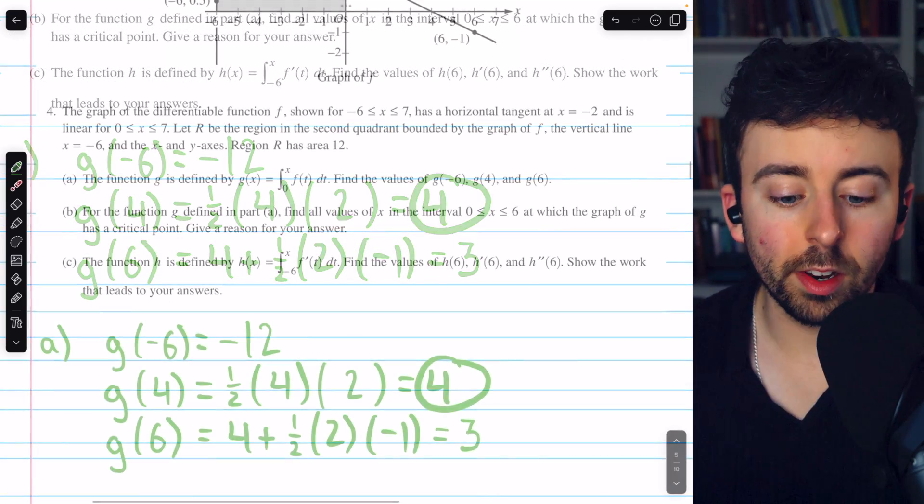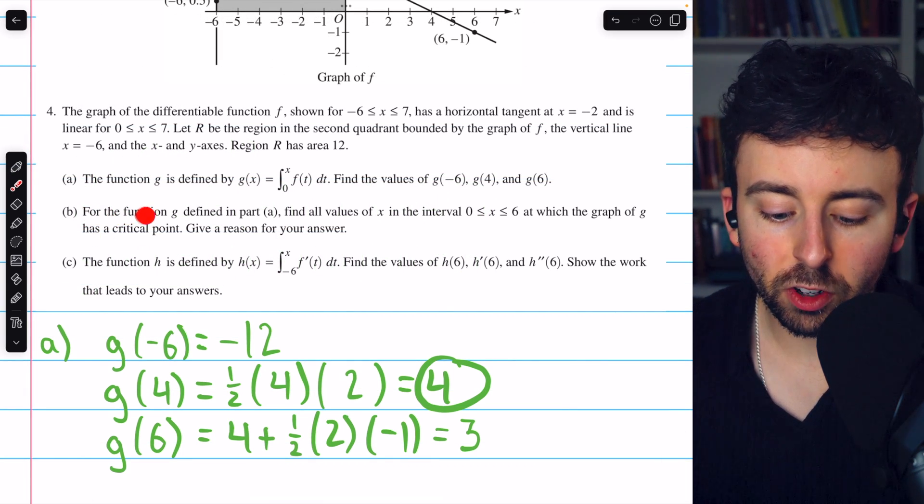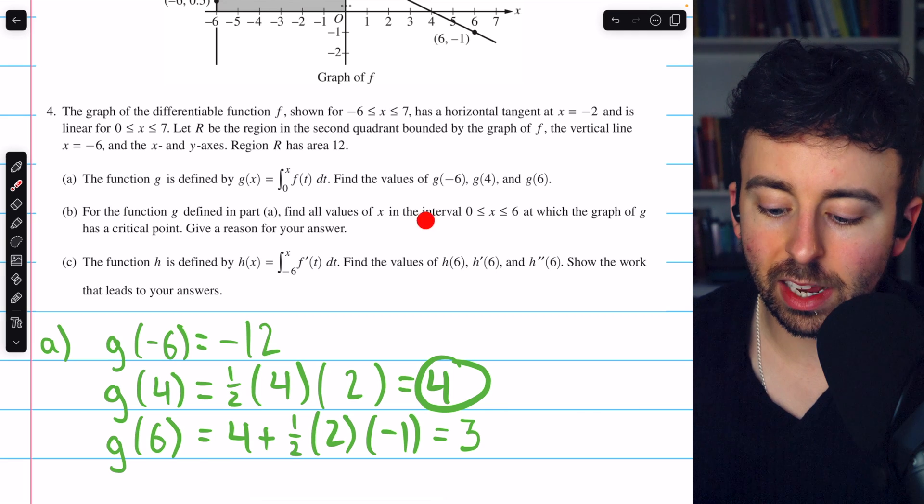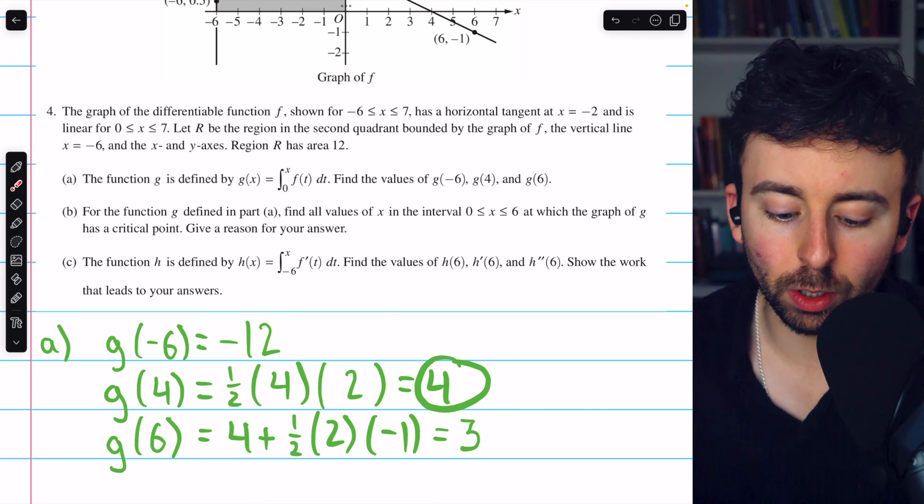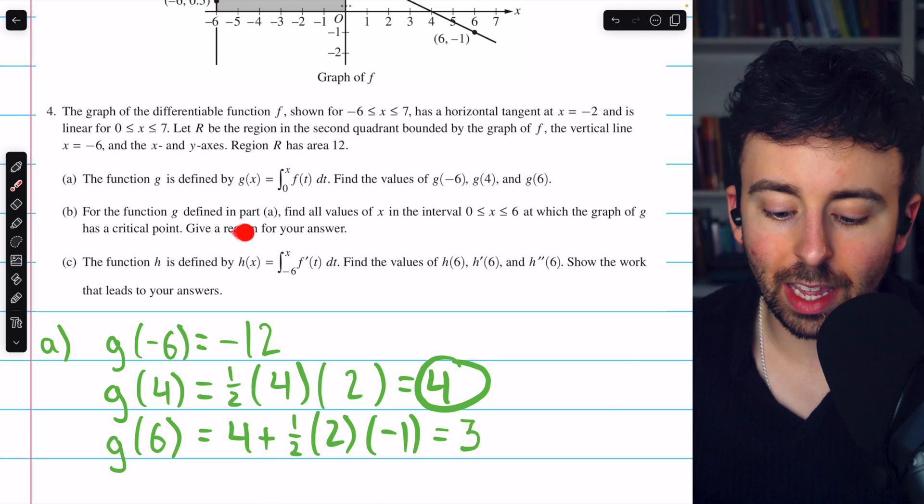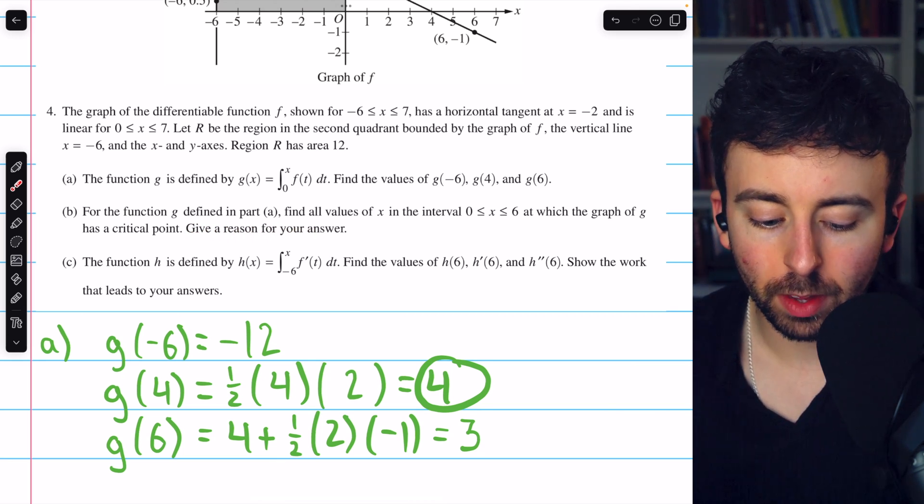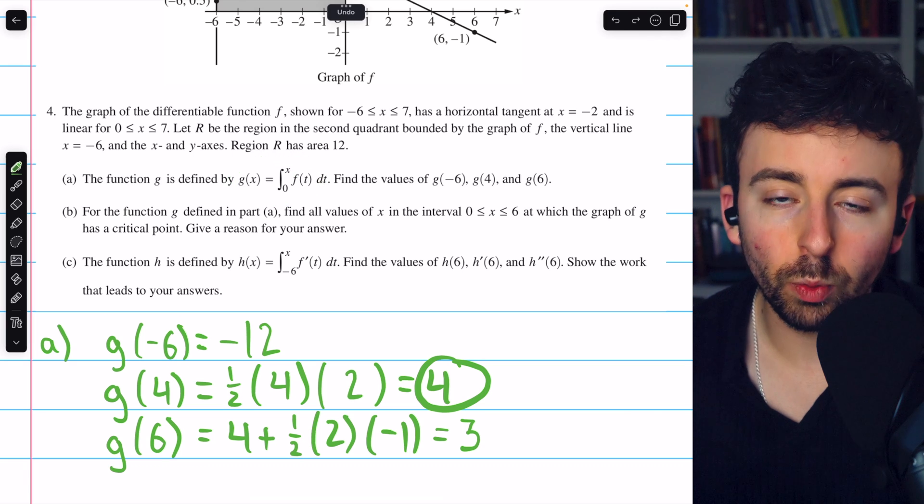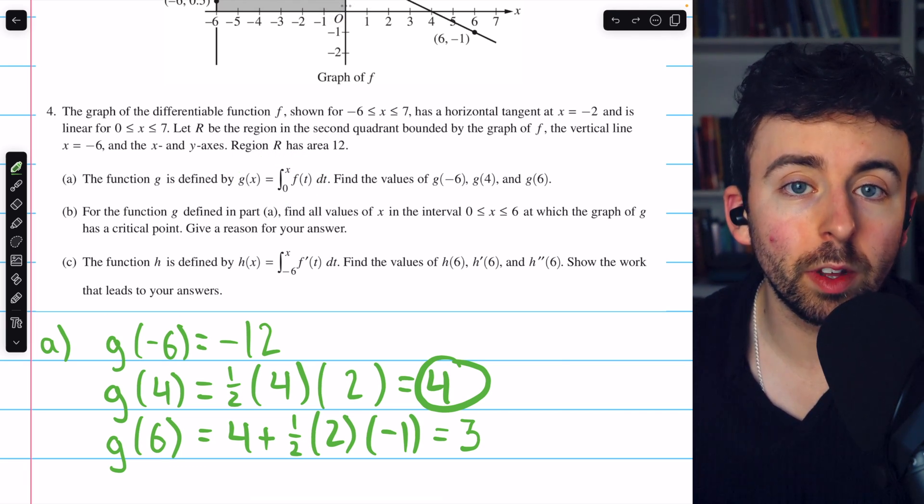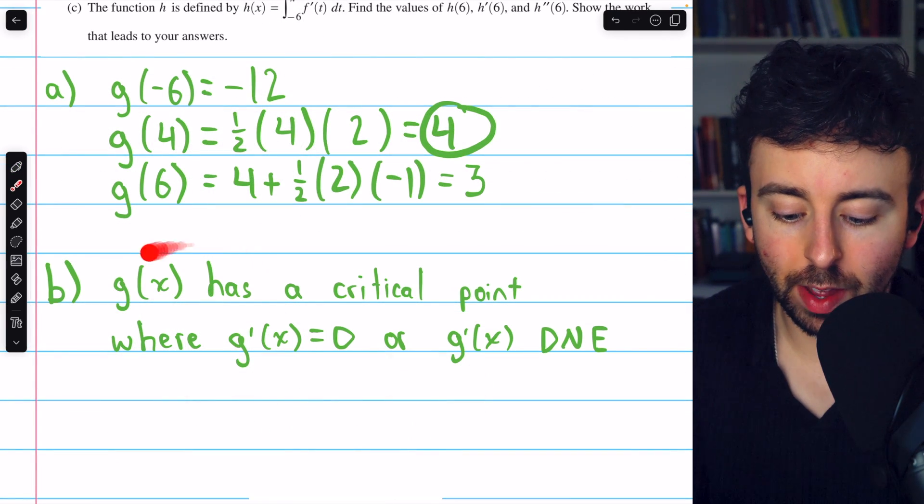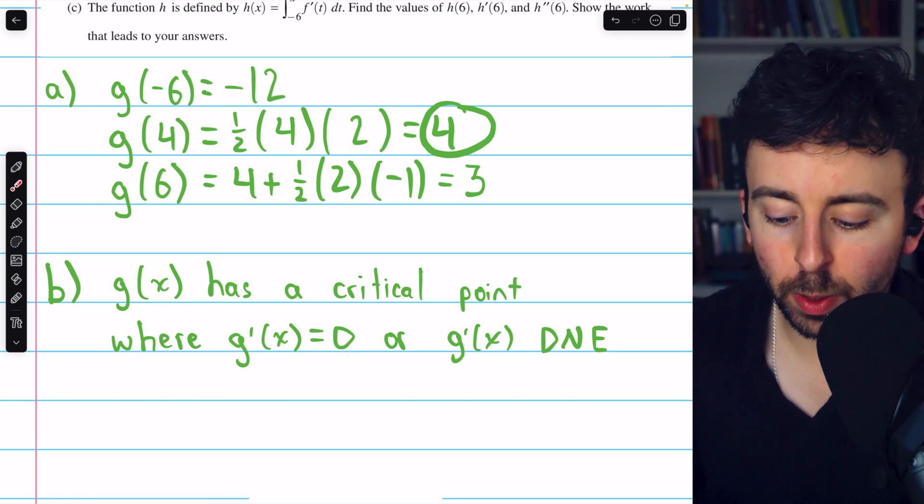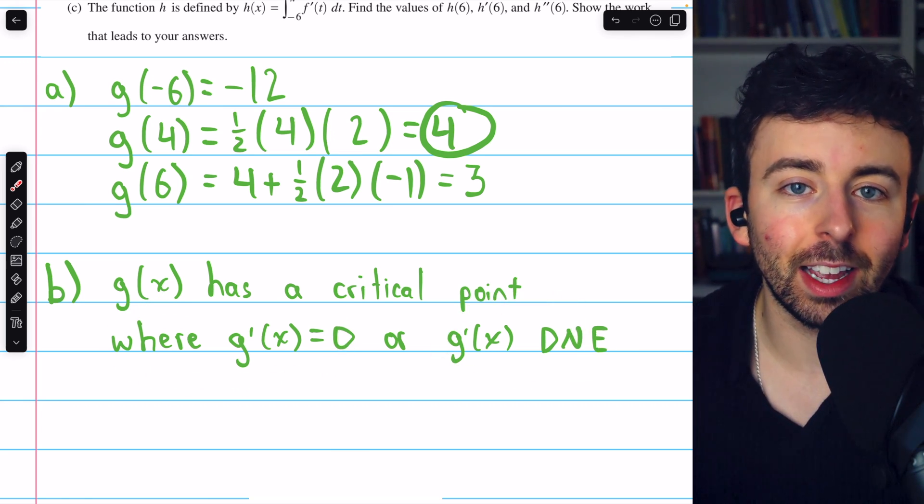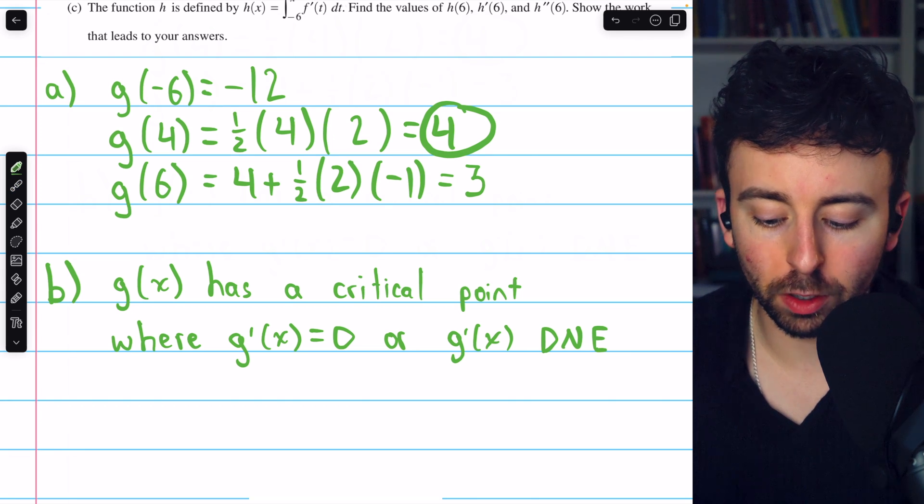On to part b, for the function g defined in part a, find all values of x in the interval from 0 to 6 at which the graph of g has a critical point. And we are asked to give a reason for our answer. To find critical points of g of x, we need to consider the derivative of g of x. We know that g of x will have a critical point where its derivative is 0 or where its derivative does not exist by definition of a critical point.